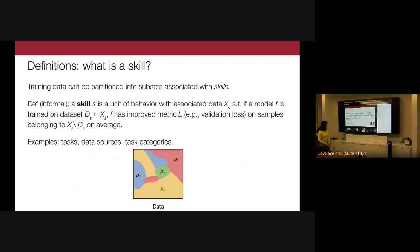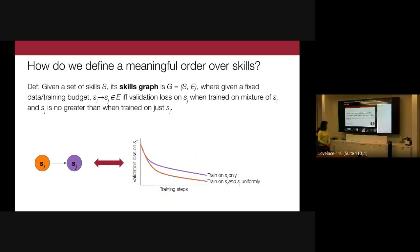What is a skill exactly? We use a very operational definition: skills are units of model behavior with associated data, where training on that data improves the model's performance on held-out data from that skill. This is a general definition meant to capture any meaningful grouping — tasks, data sources, task categories, or other metadata groupings. The next question is whether a set of skills has a particularly meaningful order to learn them in.